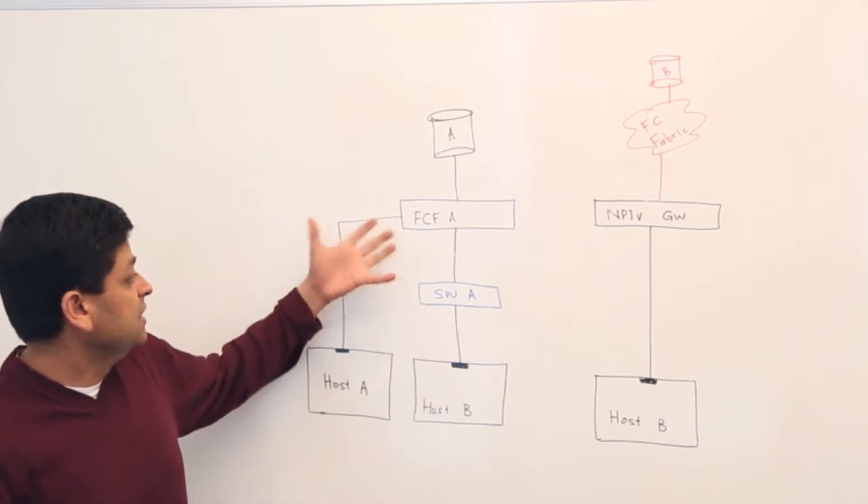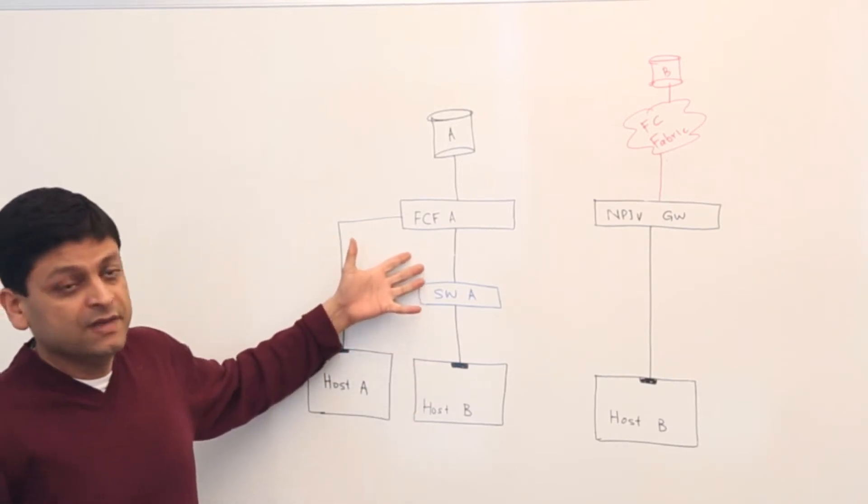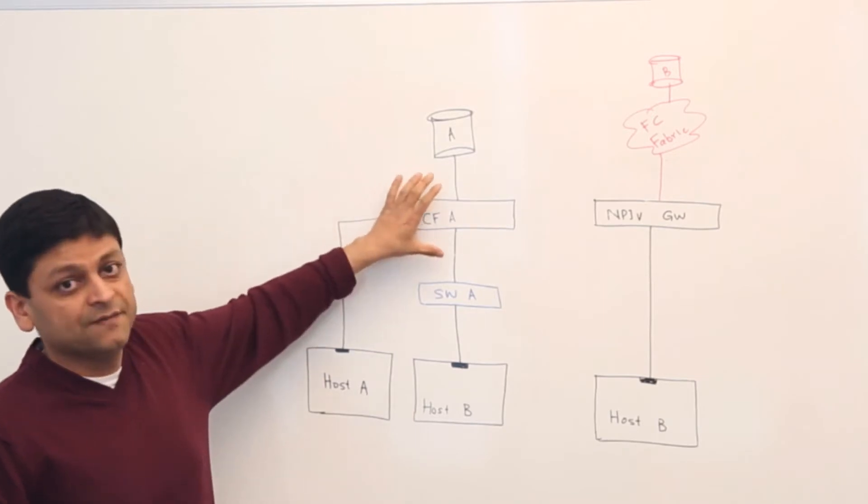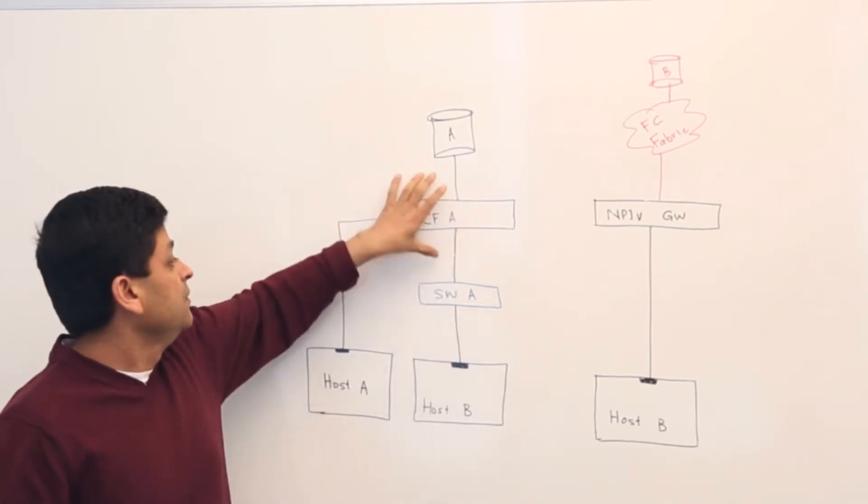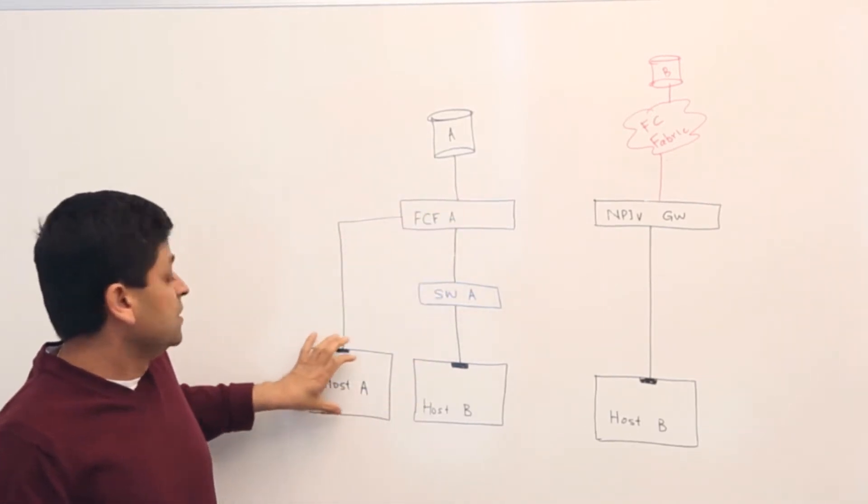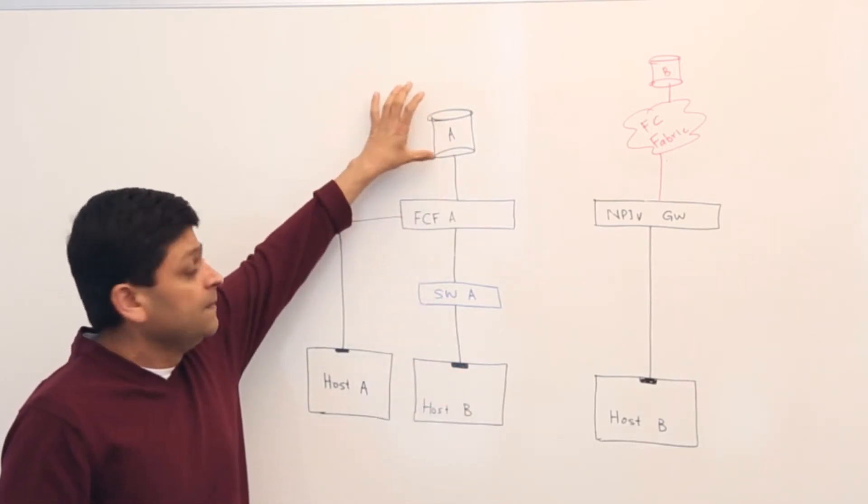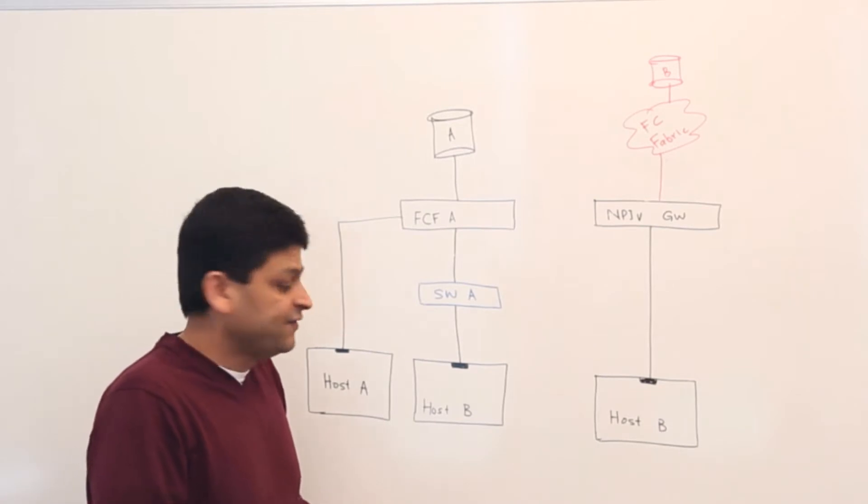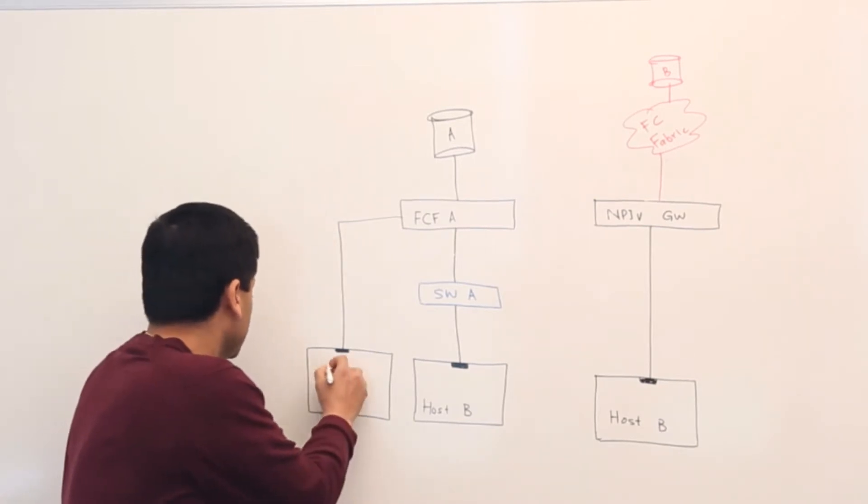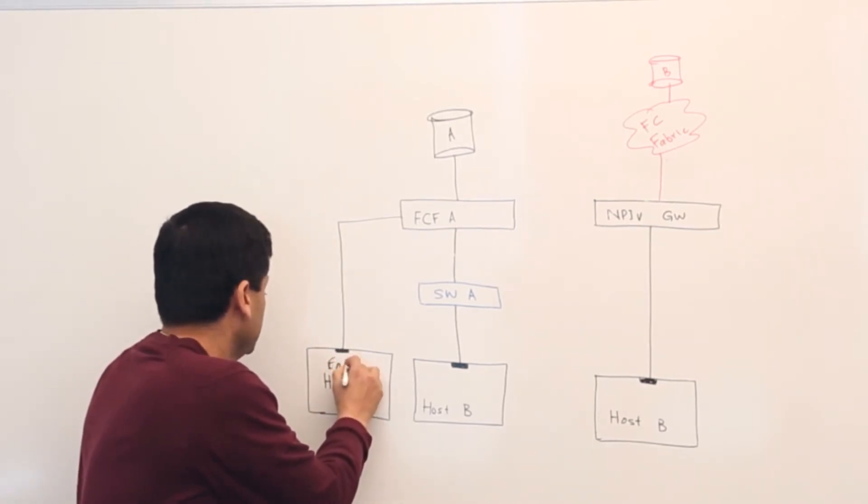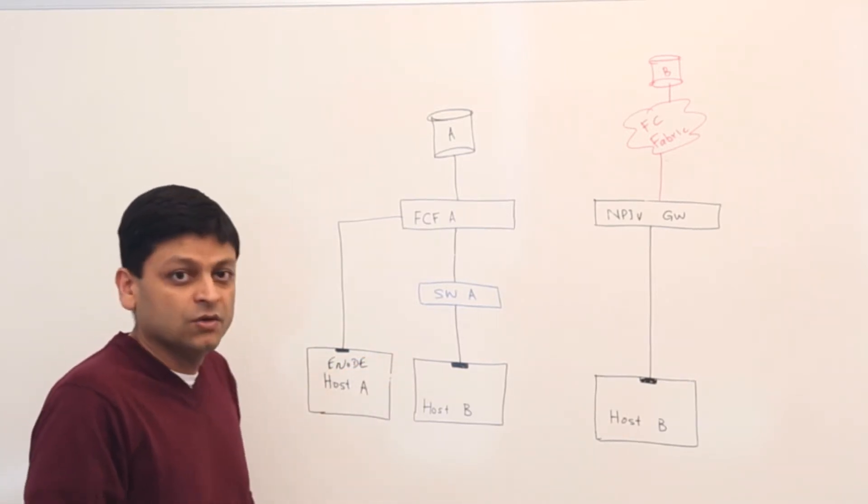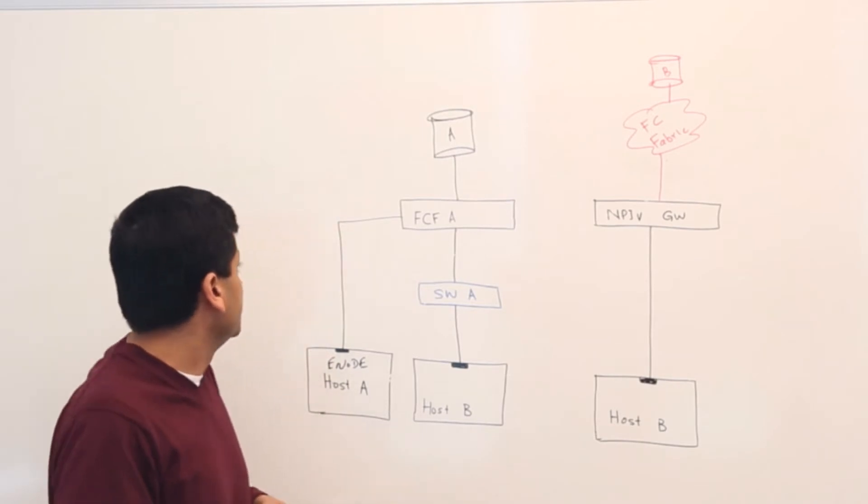So as you can see we have a smaller diagram here which shows FCF or the Fibre Channel forwarder switch. We have a host and we have targets. This is an Ethernet network. The standard defines a host as what we call enode. These are just the official terms but we can say host or initiator. It kind of means the same thing.